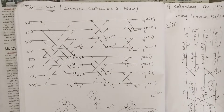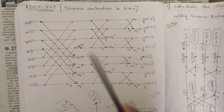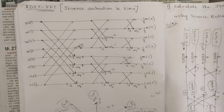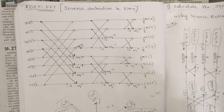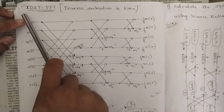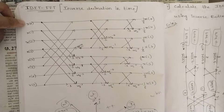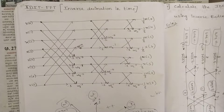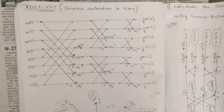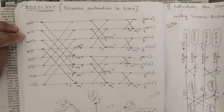Hello everyone, welcome to this new session. In our previous sessions we discussed the DIT FFT algorithms and two important problems: four-point DFT and eight-point DFT, and we saw their structure. Now in this session we are going to discuss the inverse of that, that is IDIT FFT — inverse decimation in time. If you know the DIT FFT concept well, you can easily write this because it is just the inverse. Those who have not seen that video, please watch it first as it is available on our channel.